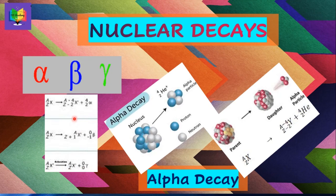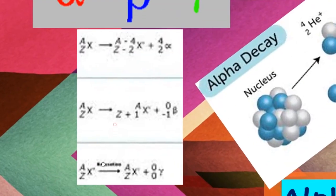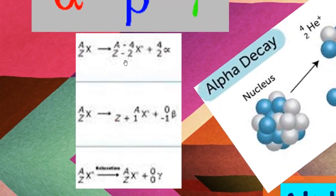There are different generic equations given here. For alpha decay, it can be seen that the nucleon number changes by four units and the proton number decreases by two units. Where X is the symbol for the element, Z is the proton number, and A is the nucleon number, which consists of protons and neutrons.